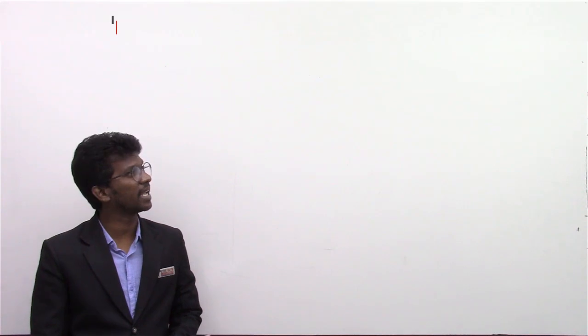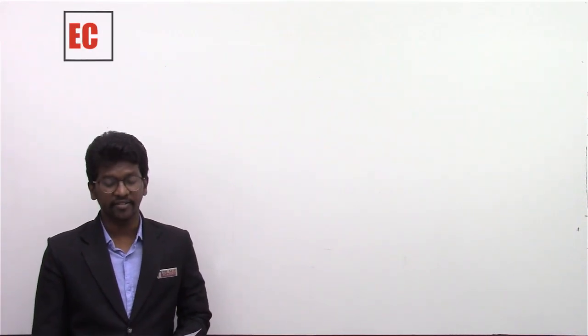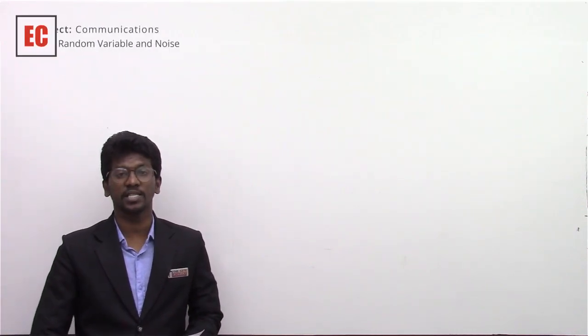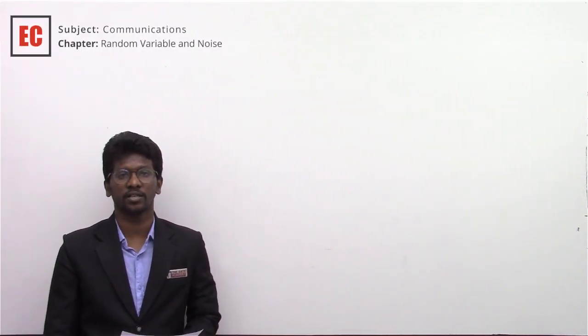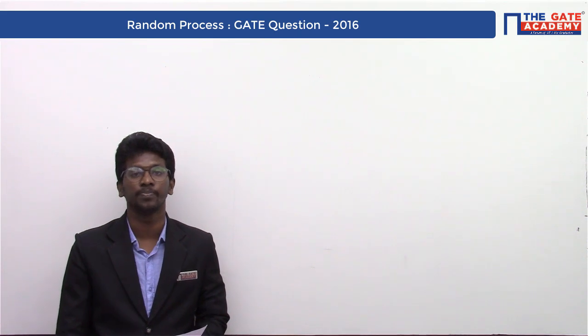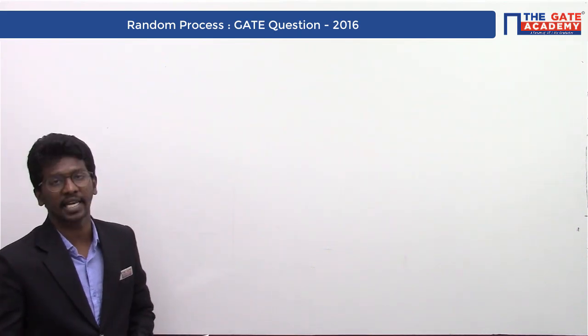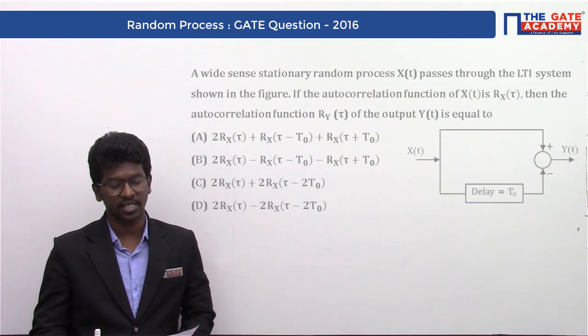Hello everyone, today we are going to discuss an important GATE problem from 2016, from the subject communication. This problem belongs to the chapter of random signal and noise, and the topic is random process. You can observe the question on the screen.